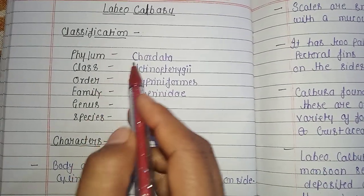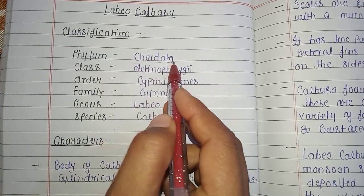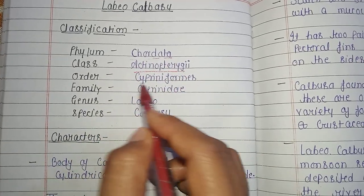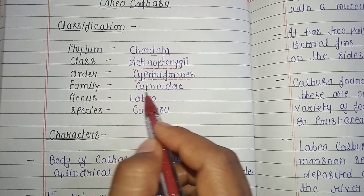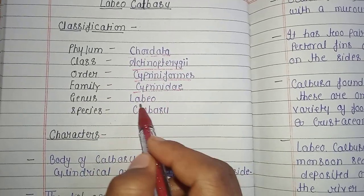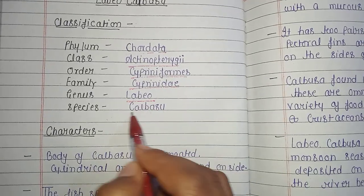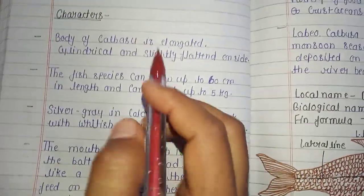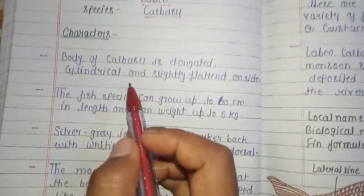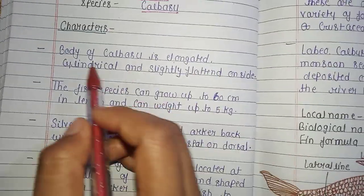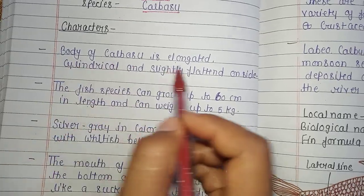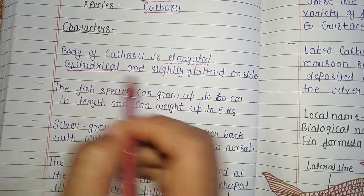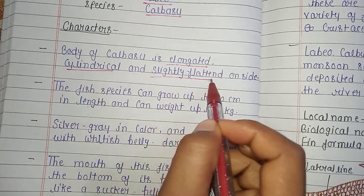The next topic is Labio calbasu. Its classification: phylum Chordata, class Actinopterygii, order Cypriniformes, family Cyprinidae, genus Labio, and species calbasu. The body of calbasu is elongated, cylindrical, and slightly flattened.